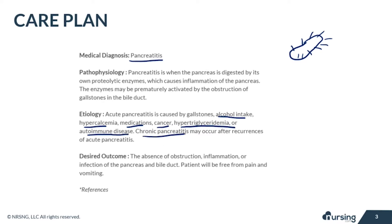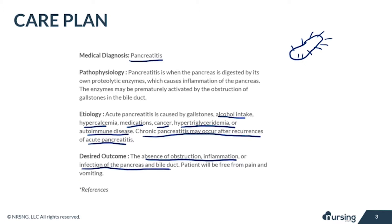Chronic pancreatitis may occur after recurrences of acute pancreatitis — for example, if a patient continues to drink alcohol repeatedly, they will keep getting pancreatitis until it becomes chronic. Our desired outcome is the absence of obstruction, inflammation, or infection of the pancreas and bile duct, and the patient will be free from pain and vomiting.